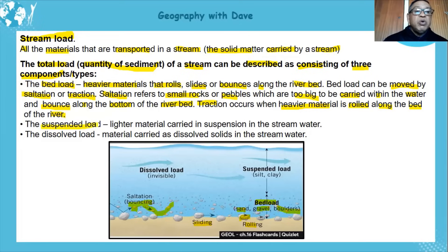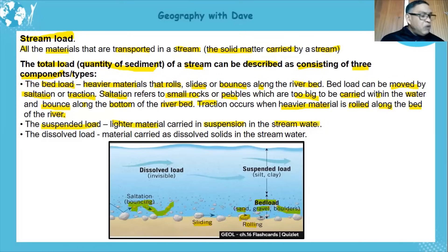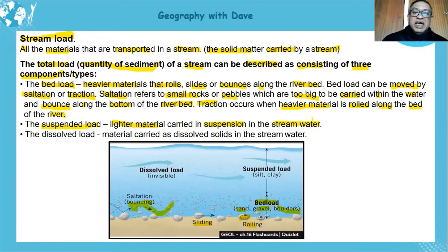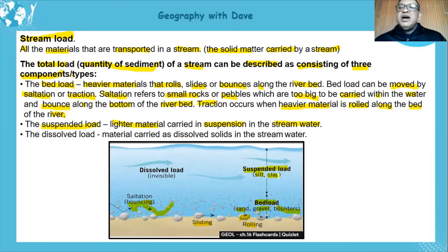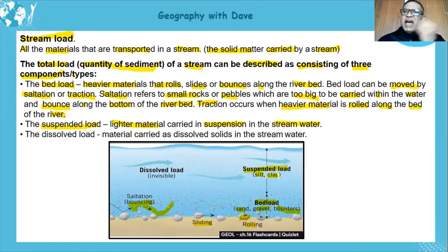Next we have the suspended load. This deals with lighter material carried in suspension in the stream water — they're not heavy enough to sink, so they're light enough to be suspended. Your suspended load consists of silt and clay. Sometimes if you run your hands through flood water you'll find little specks — that's very light material being suspended.